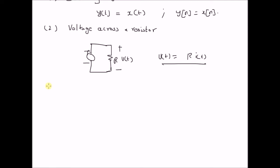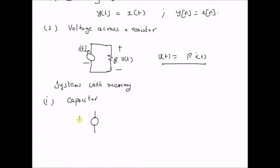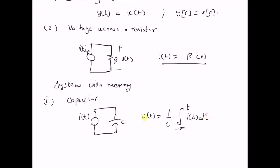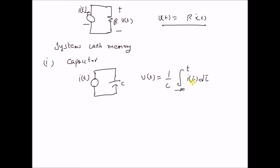Now let us look at examples of systems with memory. The first example is a capacitor. There is a voltage source or current source which produces current i(t) and it goes through a capacitor C. The voltage across the capacitor is given by (1/C) times the integral from minus infinity to t of i(τ) dτ. That is, the voltage stored across the capacitor depends on the current from minus infinity to the current instant — it depends on the values of the electric current from minus infinity to the current instant. So this is a system with memory; it depends not only on the current value of the electric current but also on the previous values.